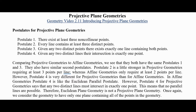If we compare projective geometries to affine geometries, we see that they both have the same postulates one and three exactly the same, and they have similar second postulates. Postulate two is a little stronger in projected geometries, requiring at least three points per line, whereas affine geometries only require at least two. However, postulate four is very different. In affine geometries, postulate four is like the Euclidean parallel postulate — so we have some parallel lines. But postulate four for projected geometry says any two distinct lines must intersect in exactly one point, meaning there are no parallel lines possible. So Euclidean plane geometry is definitely not a projected plane geometry because it violates postulate four.